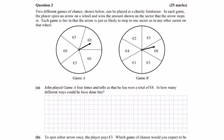This is the 2014 probability question 3. Two different games of chance can be played. In each game, the player spins an arrow. We can see the arrow here lands on a sector. There's five sectors in this one and six in this one. So question A: John played Game A four times and he won eight euros.